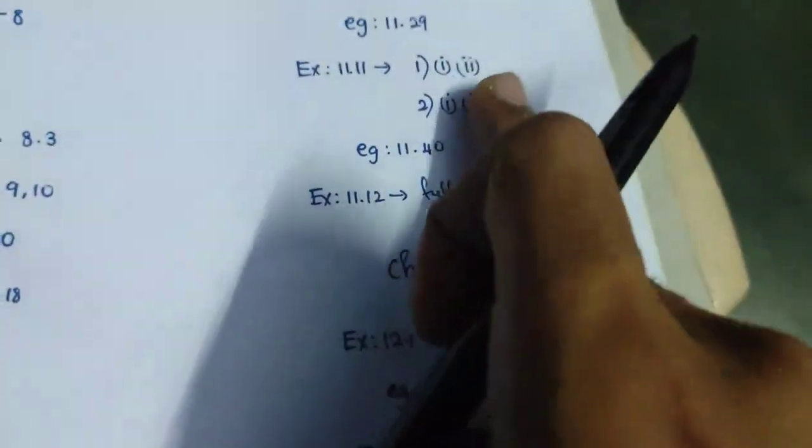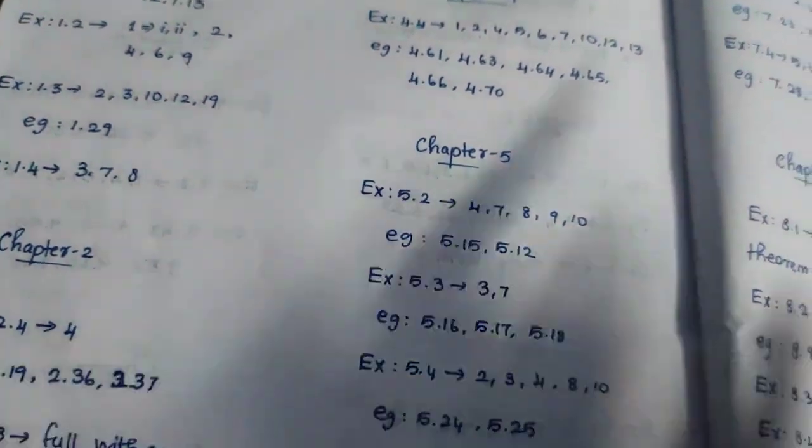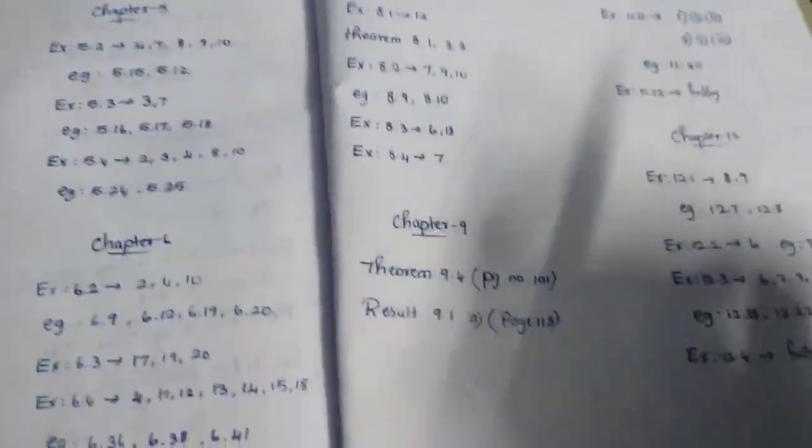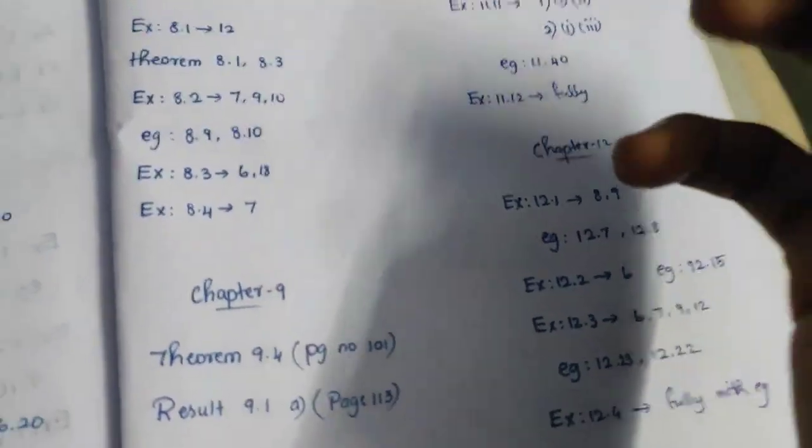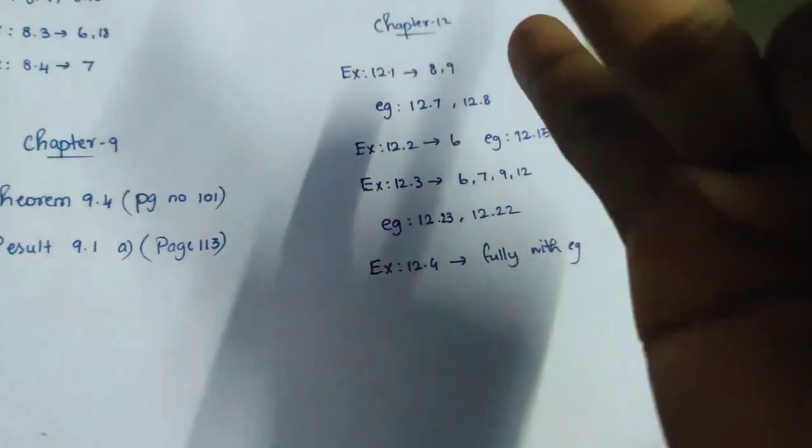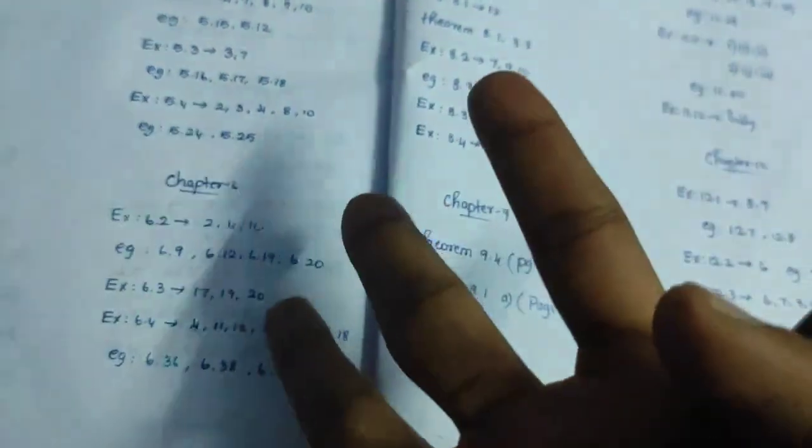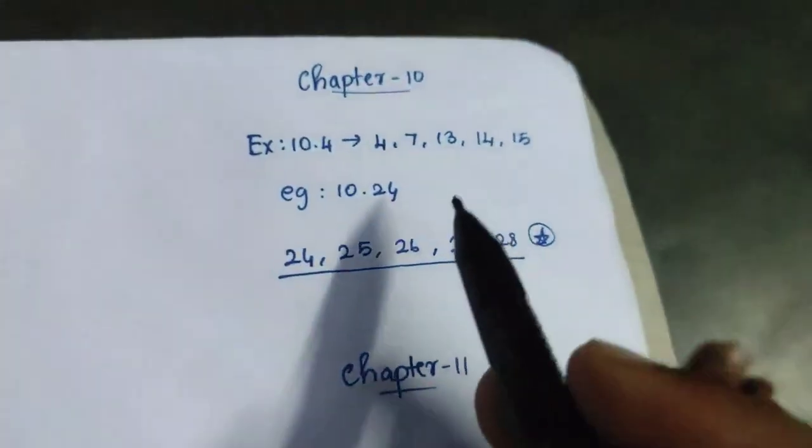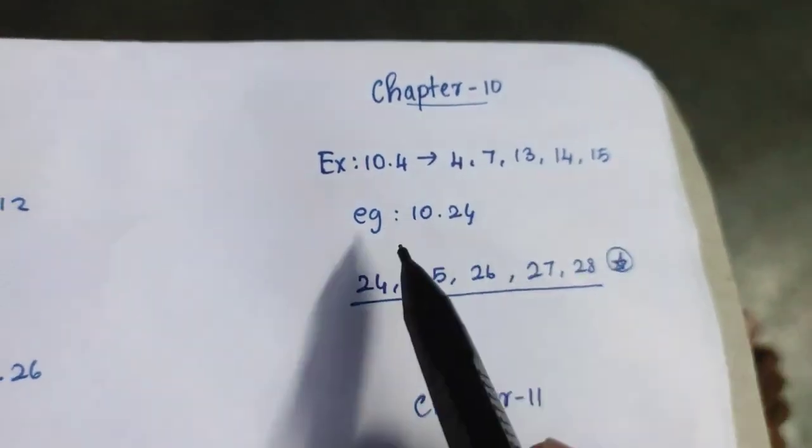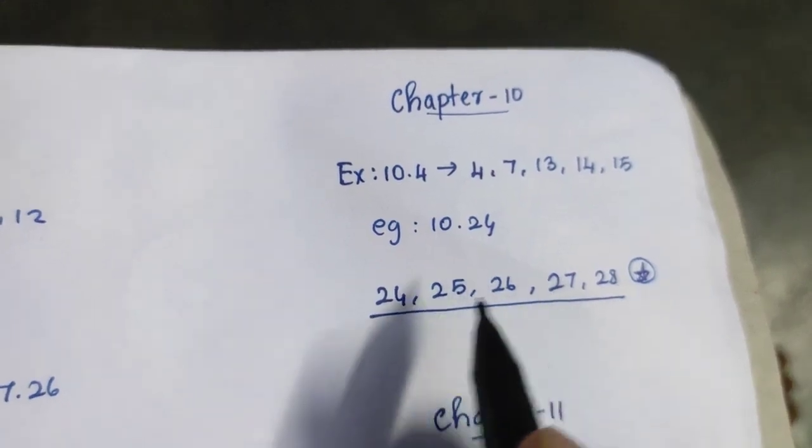In this 10th chapter you have 11, 12, 1, 2, 3. You have 10 marks on this. I guarantee you can say anything. Probability is 10 marks, 5 marks. Statistics first lesson 5 marks, matrix number 5. This is the 10th chapter, Exercise 10.4, 4, 7, 13, 14, 15. Example 10.24, 24, 25, 26, 27, very important. You can learn the star very important 10th chapter.